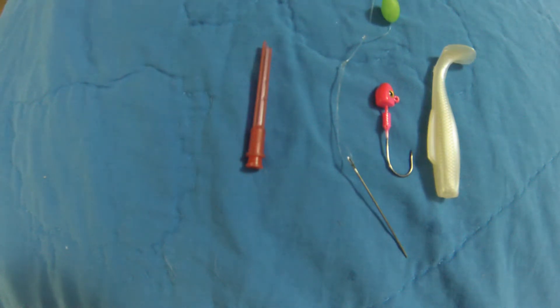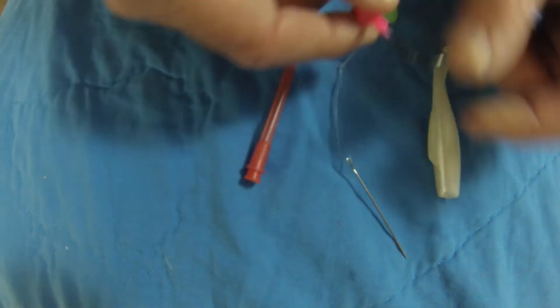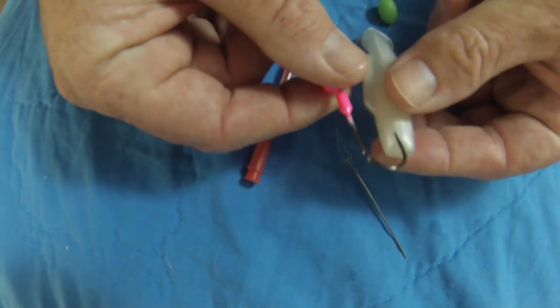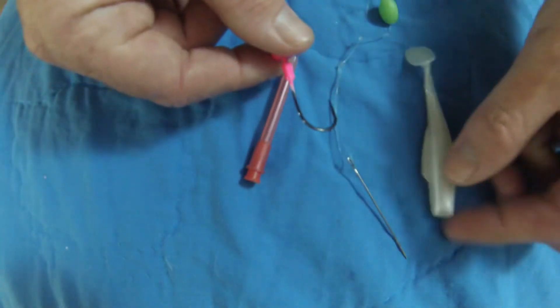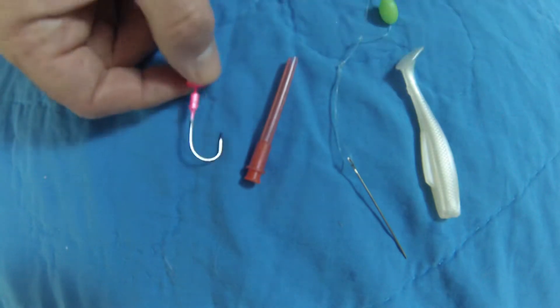Alright guys, I decided to do a video on how to rig a soft plastic. Now some of you may be wondering why do this, and the reason is because basically everything I've seen on YouTube so far, the explanation is just 'thread it on the hook,' as if I couldn't figure that out for myself.